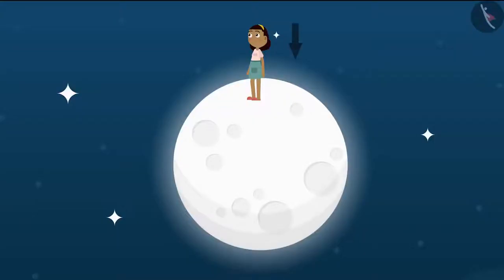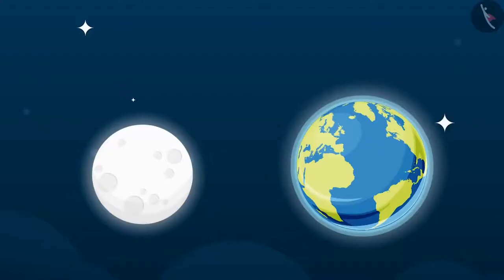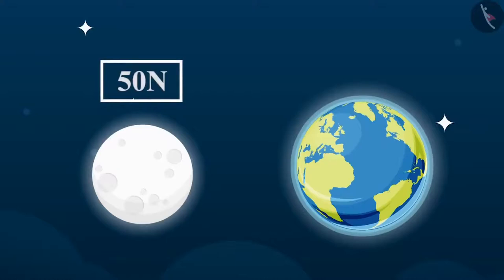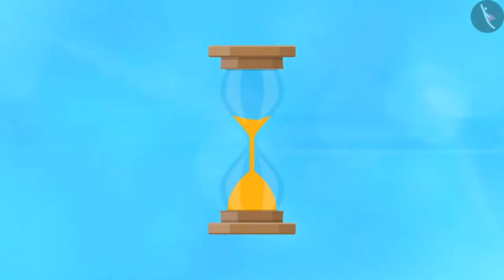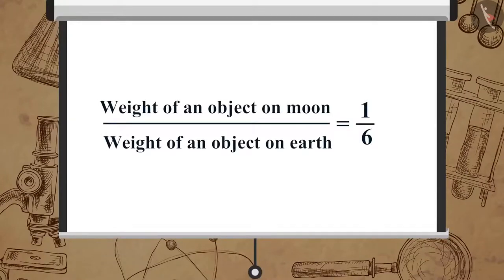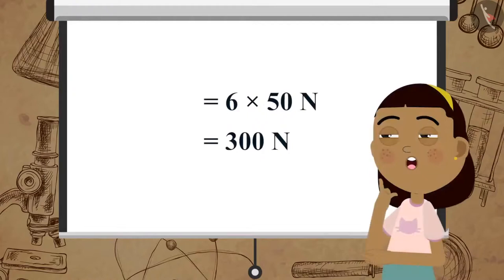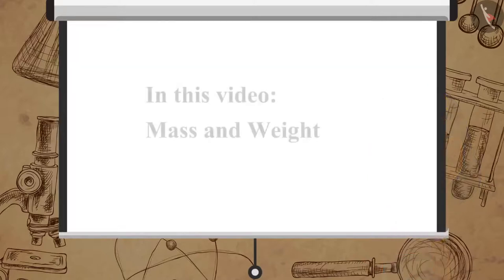Now let us solve a problem together. The weight of an object on the moon is 50 Newton. How much will the object weigh on the earth? Since weight on moon = (1/6) × weight on earth, weight on earth = 6 × 50 Newton = 300 Newton.